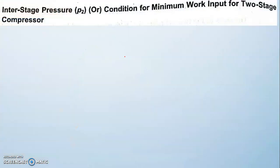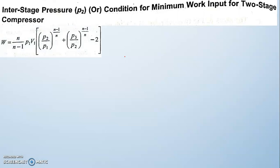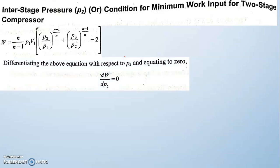In the previous class we have already discussed the condition, that is the work done equation. Now we are going to calculate the condition for minimum work done — or the same derivation can be used for finding the equation for intermediate pressure. We will be differentiating the above equation with respect to p2 and equating that equal to 0.